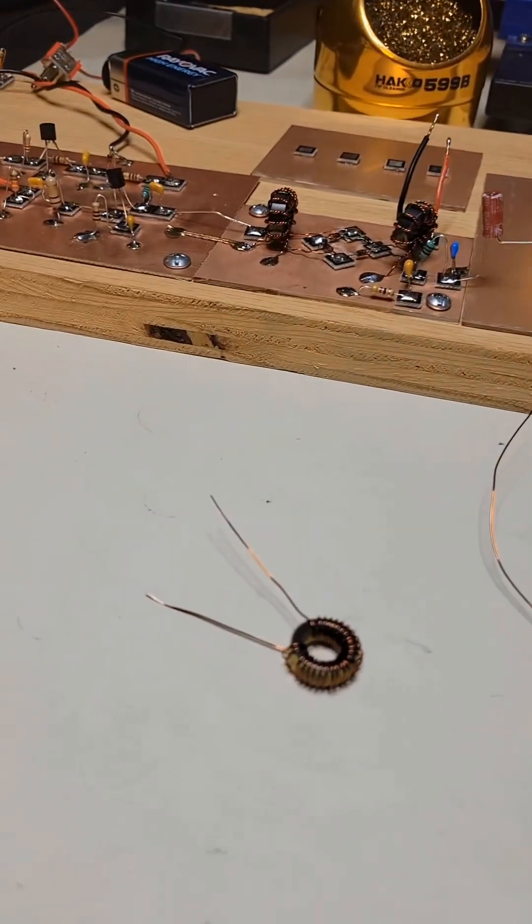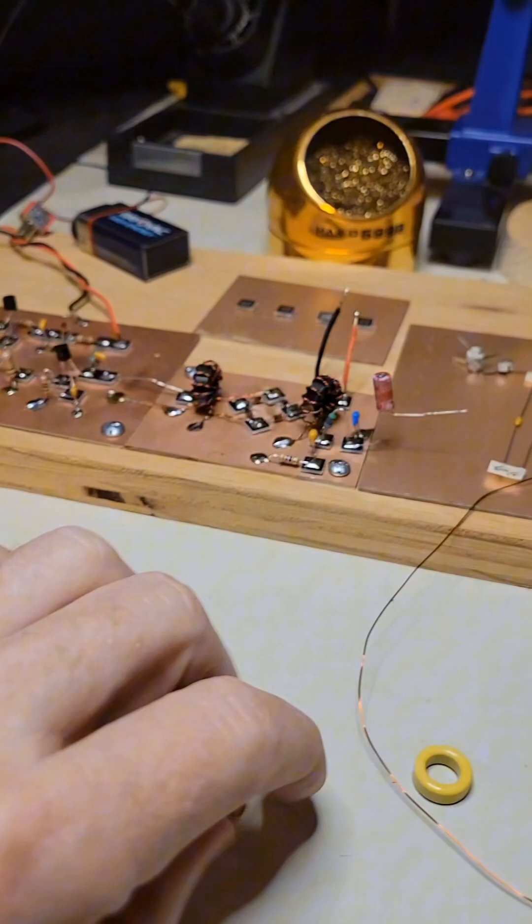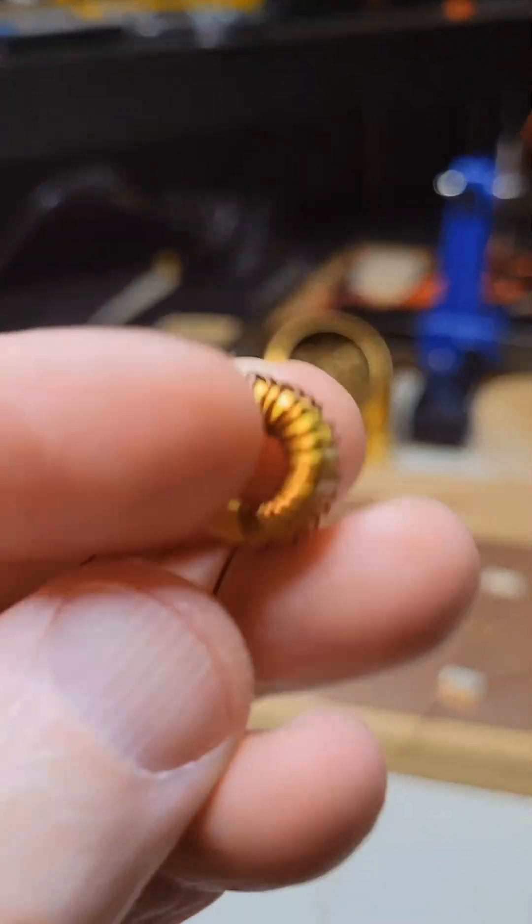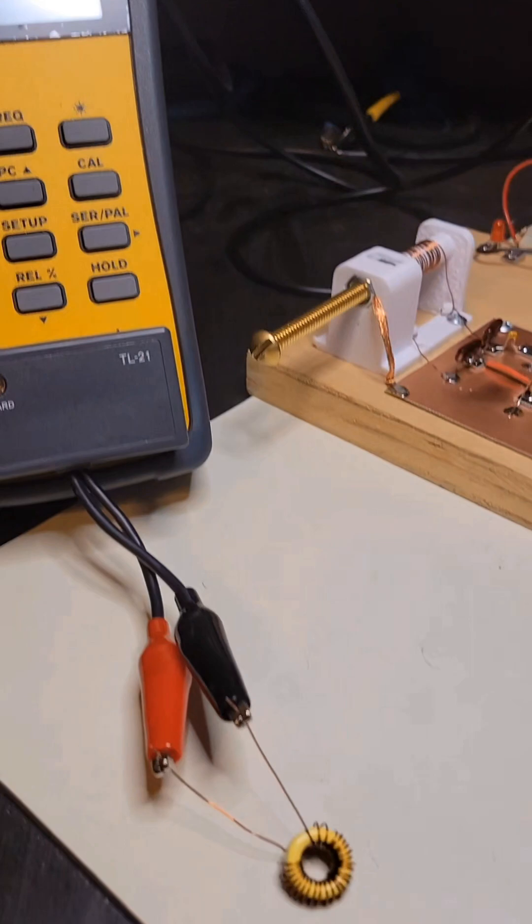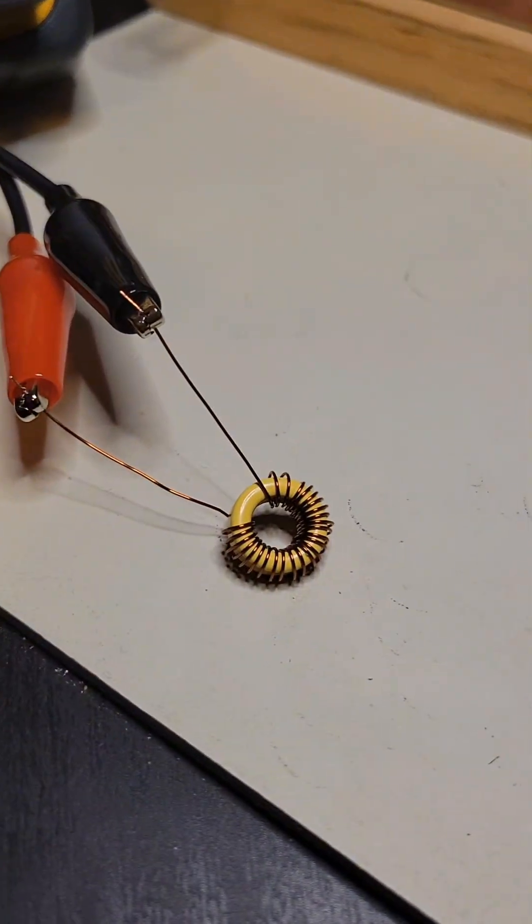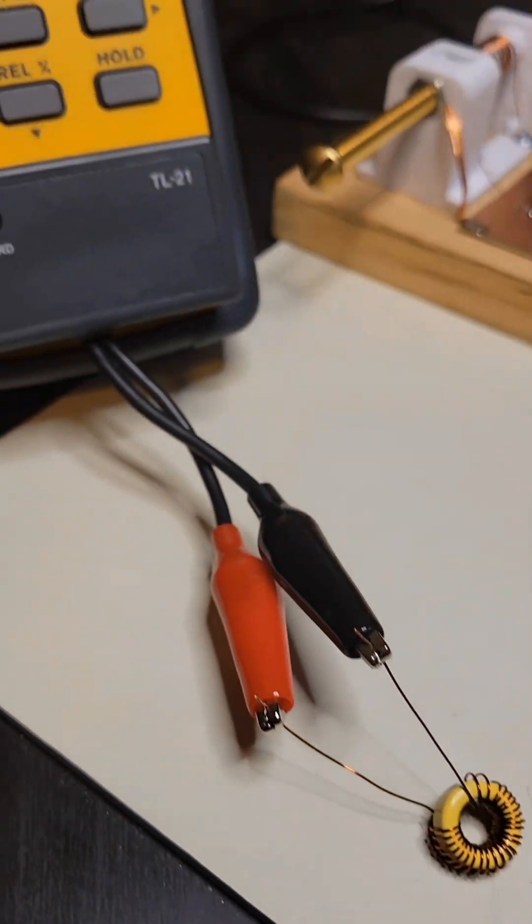I put 26 turns on one of the toroids, and this is what it looks like. Then I connected it to the LCR meter, and I see it is the inductance I expected. It's 3 microhenries on the meter.